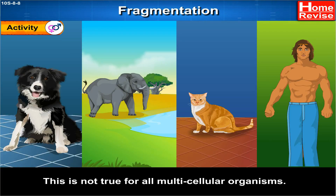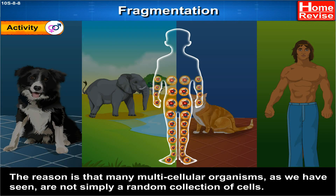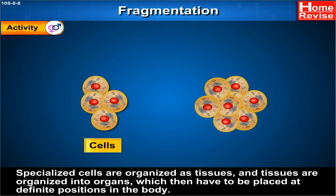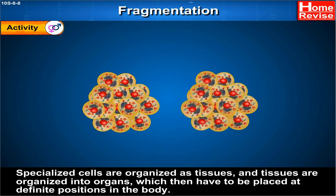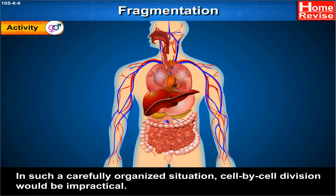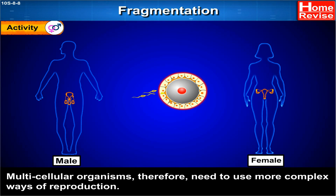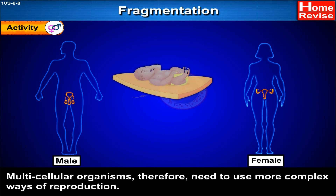This is not true for all multicellular organisms. The reason is that many multicellular organisms are not simply a random collection of cells. Specialized cells are organized as tissues, and tissues are organized into organs, which then have to be placed at definite positions in the body. In such a carefully organized situation, cell-by-cell division would be impractical. Multicellular organisms, therefore, need to use more complex ways of reproduction.